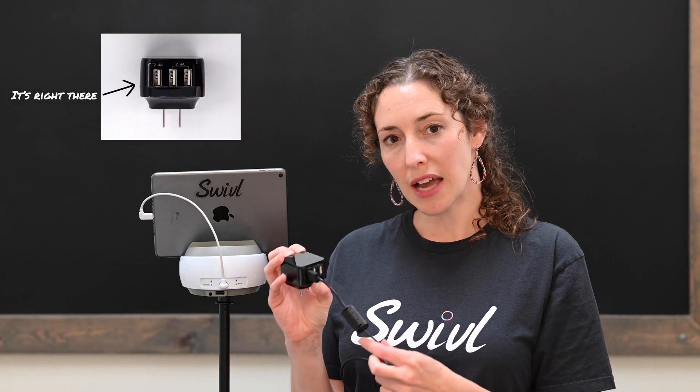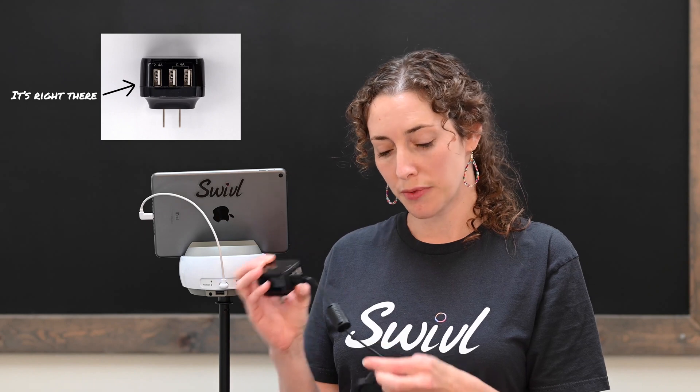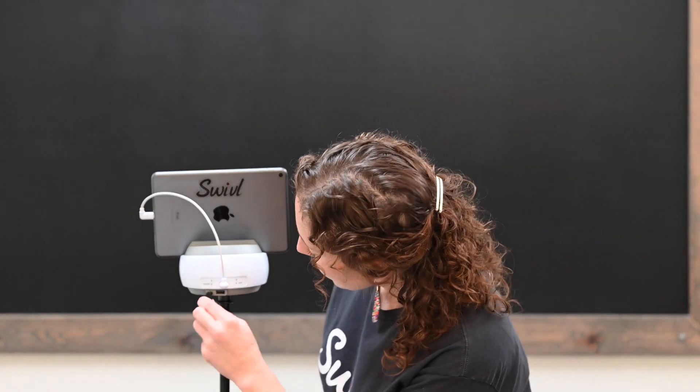I'll start by connecting my barrel charging cable to the USB charging block. One end of the cable will fit into the charging block. Make sure that you use the port on the left hand side for the most efficient charge. The other end of the cable will fit into the Swivel robot base.